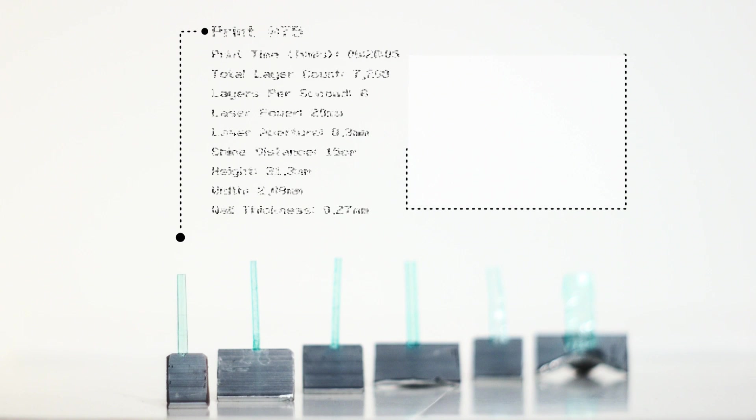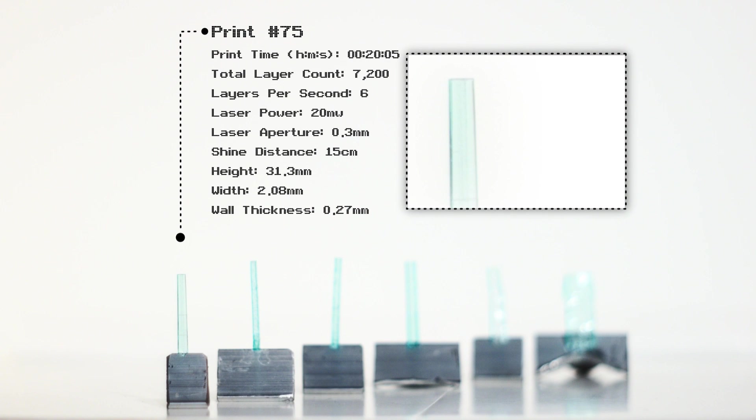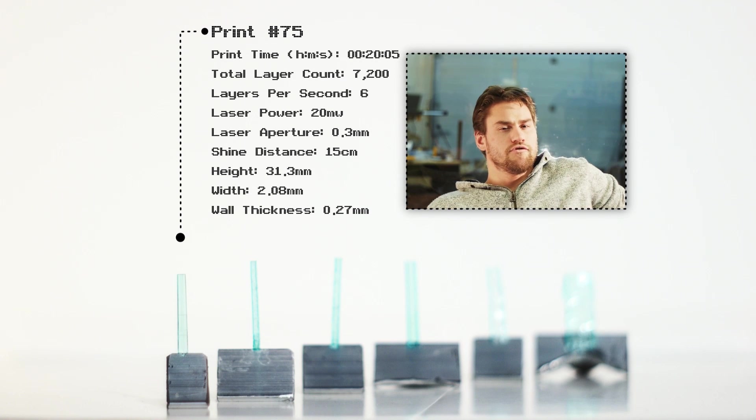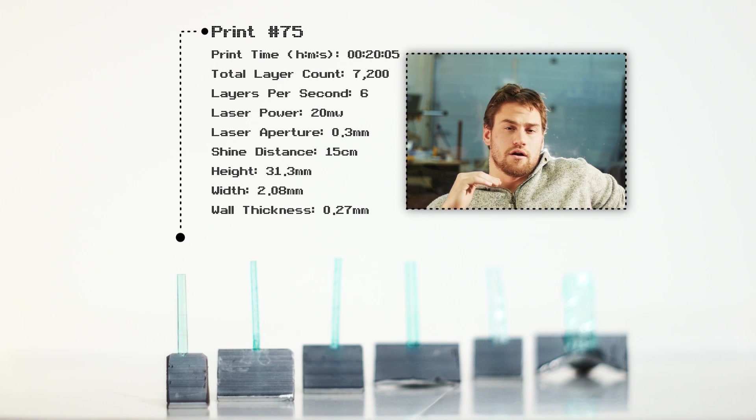So to attempt to get the very best print possible with P22, I gave the printer a very small aperture so we would have a very small wall size and a very small focus spot. I moved the printer very close to the resin only about 15 centimeters away. I did six layers per second over 20 minutes and I really gave the print a lot of time to rise.